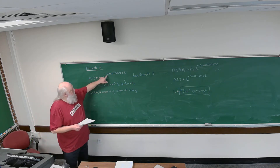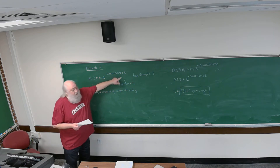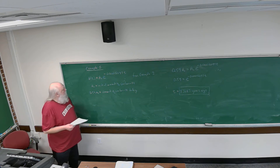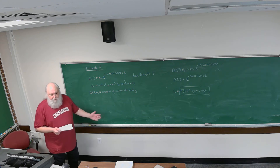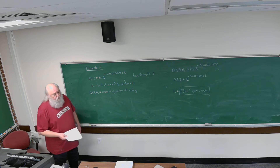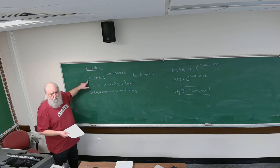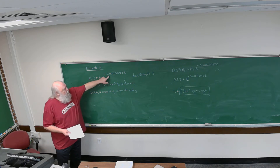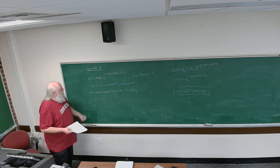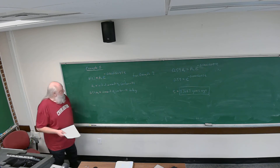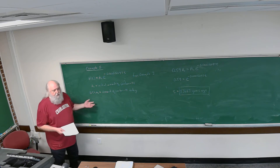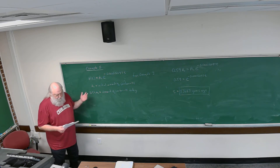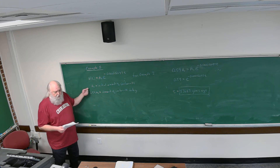The decay rate for carbon-14 was found to be minus 0.0000012097. Our exponential decay model for carbon-14 is: the amount of carbon-14 at time t equals the original amount of carbon-14 times e raised to that decay rate times t. Here, a sub zero is the initial amount of carbon-14.